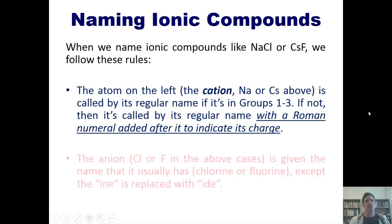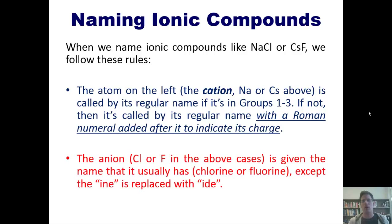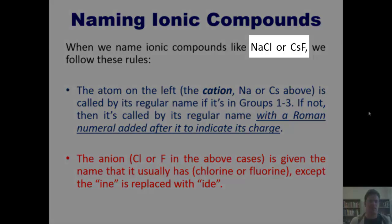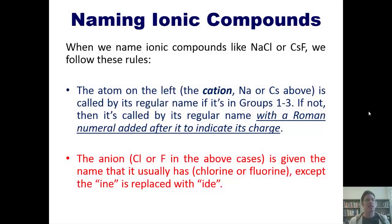Next is the anion, which would be chlorine or fluorine in these examples shown here, is given the name that it usually has, except that the '-ine' part is replaced with the suffix '-ide'. So it'd be called chloride or fluoride. So we would call this sodium chloride and we don't have to say sodium 1 because it's in column 1 of the periodic table. This would be called cesium fluoride.